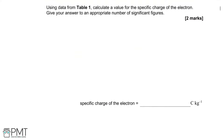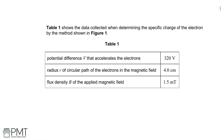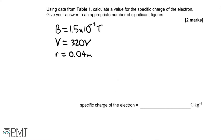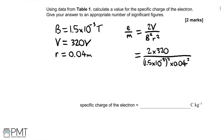Using data from table 1, calculate a value for the specific charge of the electron, giving your answer to an appropriate number of significant figures. Going back to the table, our values of V, r and B are given. We need to make sure all values are in SI units to avoid losing marks. Writing those values down in the answer space and substituting into the equation we derived, that gives us a value of 1.777 recurring times 10 to the 11.